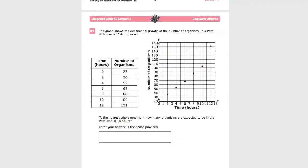The graph shows the exponential growth of the number of organisms in a petri dish over a 12-hour period. We have the table here and this graph, which is convenient so you don't have to hand determine these amounts. To the nearest whole organism, how many organisms are expected to be in the petri dish at 15 hours? Enter your answer in the space provided.